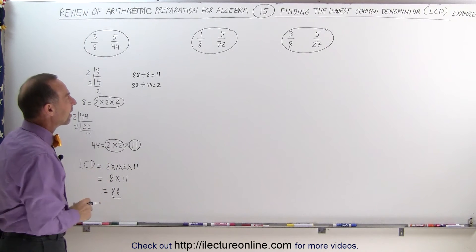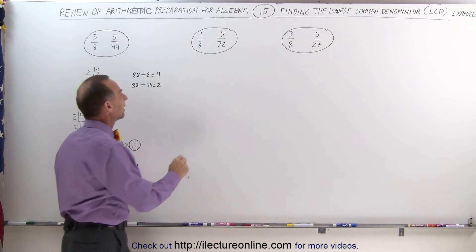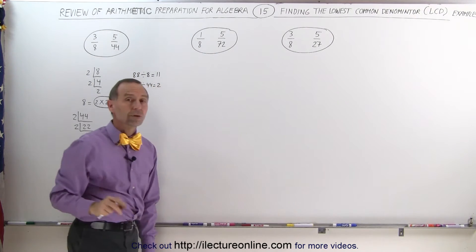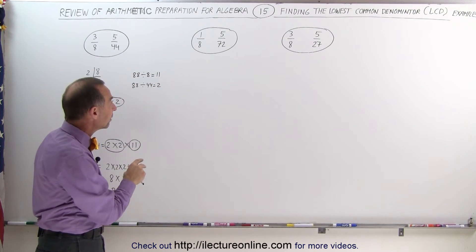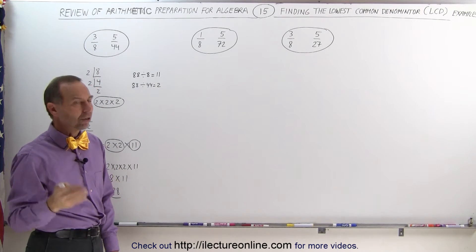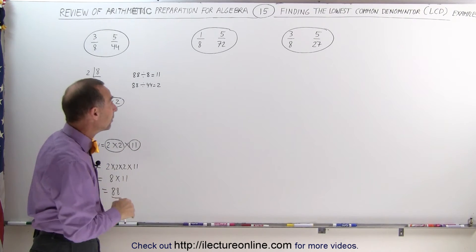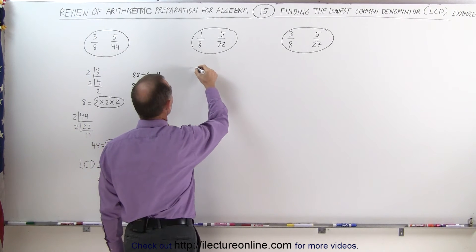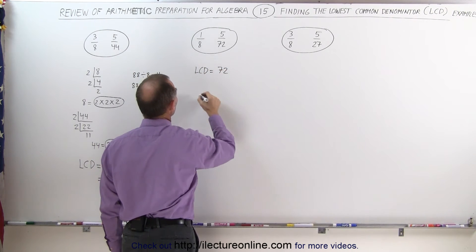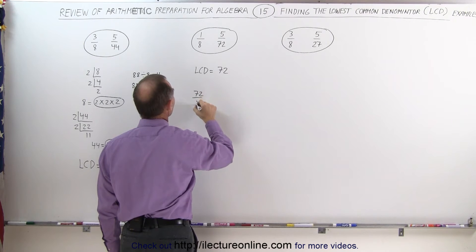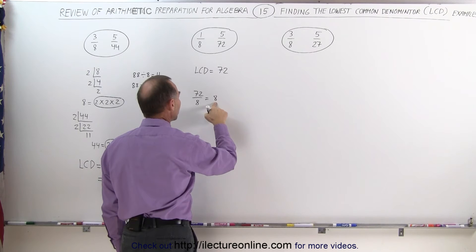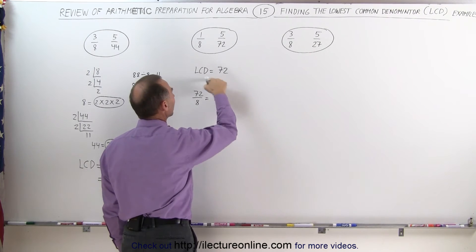On the next example, we notice that 8 will indeed fit evenly into 72. The rule is: if the smallest denominator fits evenly into the largest denominator, the largest denominator becomes the lowest common denominator, or the LCD. In this case, the LCD is equal to 72, because 72 divided by 8 is equal to 9, an integer, which means that is correct.